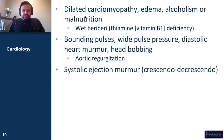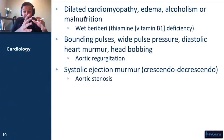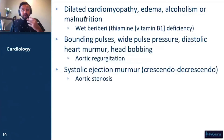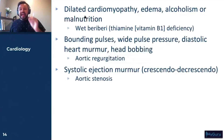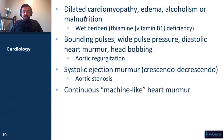Systolic ejection murmur, crescendo-decrescendo — this is aortic stenosis. If the patient on your USMLE is around 40 years old, that's due to a bicuspid aortic valve, which gives early onset aortic stenosis. You can also get aortic stenosis in the elderly patient, which usually presents as syncope, angina, and dyspnea on your USMLE.